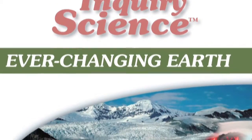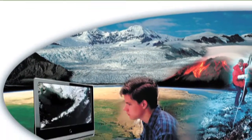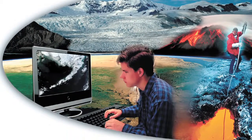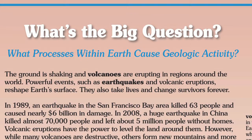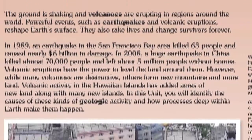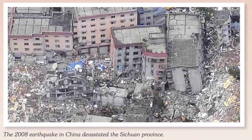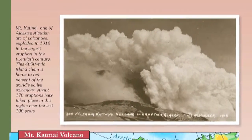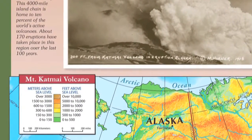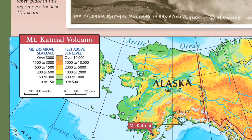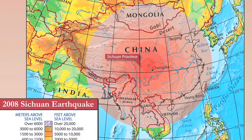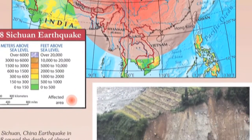The unit we're doing right now is Ever-Changing Earth, and the unit starts with the big question: what processes within Earth cause geologic activity? We begin by taking the first couple pages in the book and looking together as a class — reading a little bit about volcanoes and earthquakes that are happening around the world in different regions. We discuss that very briefly, and then you divide the class into eight different groups.